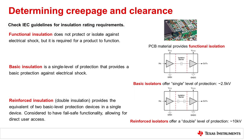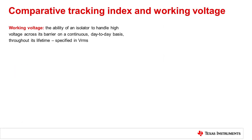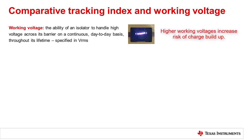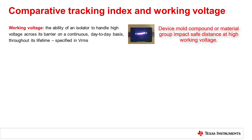Now that we know the role of isolation rating, we can look at the relationship between isolator components and creepage and clearance requirements. Working voltage, device material level, and environmental levels of altitude and pollution will all play a role in minimum creepage and clearance requirements. Working voltage is a device level specification used to quantify the ability of an isolator to handle high voltage across its barrier on a continuous, day-to-day basis throughout its lifetime. Creepage and clearance requirements are related to isolator working voltage due to the possibility of arcing that may result from charge buildup and transfer on the surface of the device after an extended period of time during operation under high working voltages.